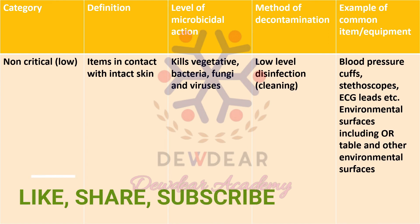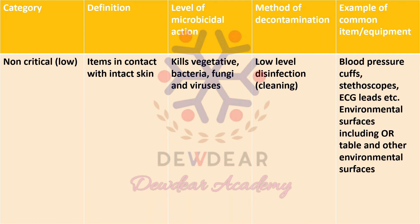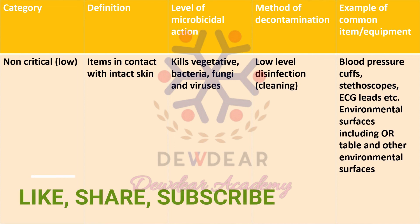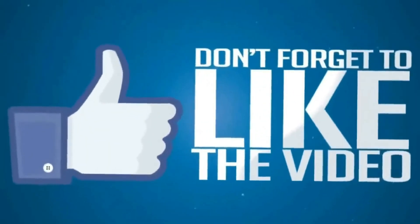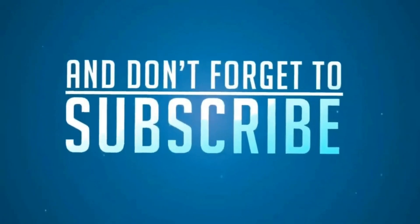These are the basic classifications according to Earl Spalding: critical, semi-critical, and non-critical. Critical items enter the sterile tissue or vascular system and require sterilization. Semi-critical items contact mucous membrane or non-intact skin and require high level disinfection. Non-critical items contact only intact skin and require low level disinfection. Thank you all, please subscribe to the channel.